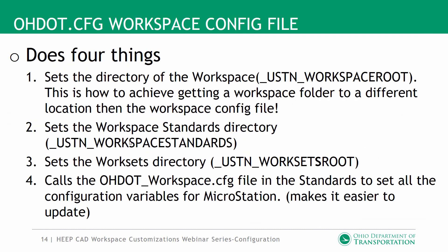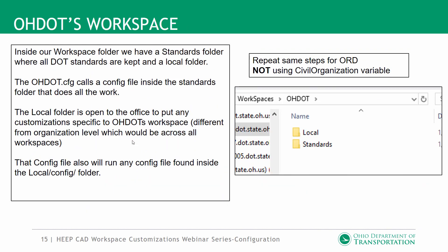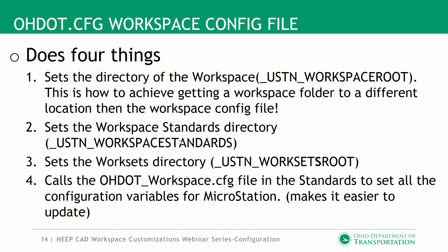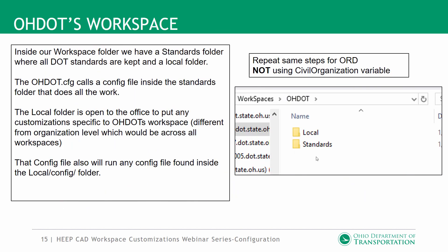Diving a bit deeper into the workspace — the OHDOT folder contains a standards folder, which is where the workspace standards variable points. Just like our old standards, if you have workspace-specific configuration you want to customize, you can create a local folder for your customizations. This is different from the organization level: the local folder is specific to the OHDOT workspace, while the organization level applies across all workspaces.